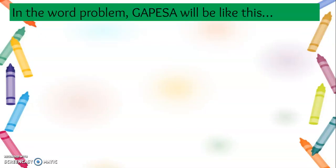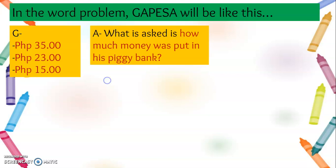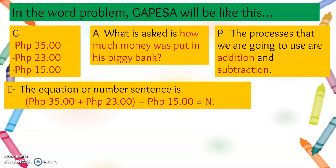In the word problem, GAPESA will be like this. For G, there are three numbers: 35 pesos, 23 pesos, and 15 pesos. For A, what is asked is: how much money was put in his piggy bank? For P, the processes we're going to use are addition and subtraction. For E, the equation or number sentence is: (35 pesos + 23 pesos) − 15 pesos = N.